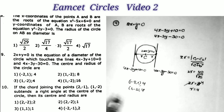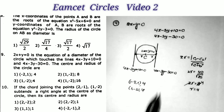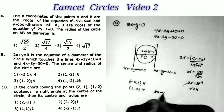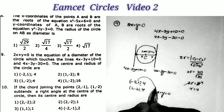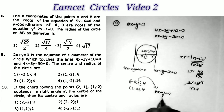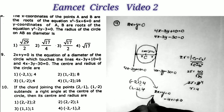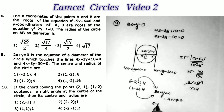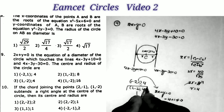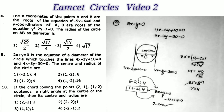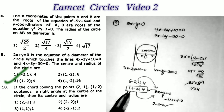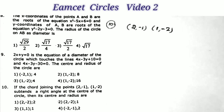To determine which option is correct, we use the condition that the diameter equation is 2x + y = 0. Replacing the first option's center point gives −4 + 1 ≠ 0, so it doesn't satisfy. Replacing the second option's center gives 2 − 2 = 0, which is satisfied. Therefore the third option is the correct answer — its center satisfies the diameter equation and radius equals 4.